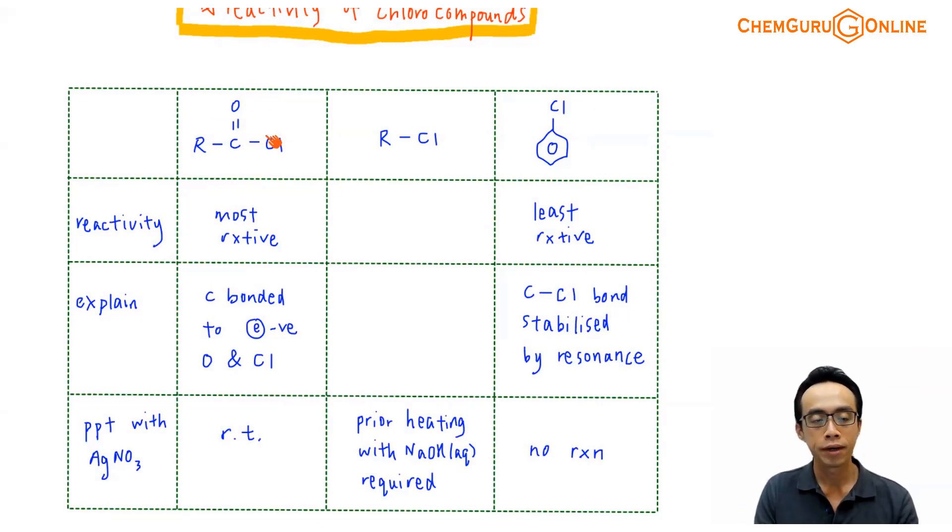In terms of reactivity, my acid chloride is the most reactive, followed by chloroalkane, followed by halogenobenzene or chlorobenzene. Now we need to explain the reactivity.